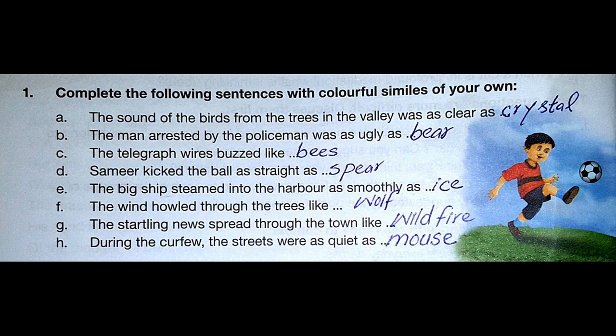Complete the following sentences with colorful similes of your own. A. The sound of the birds from the trees in the valley was as clear as crystal. B. The man arrested by the policeman was as ugly as sin. C. The telegraph wires buzzed like bees. D. Samir kicked the ball as straight as a spear. E. The big ship steamed into the harbor as smoothly as ice. F. The wind howled through the trees like a wolf. G. The startling news spread through the town like wildfire. H. During the curfew the streets were as quiet as a mouse.